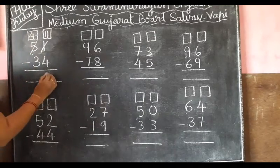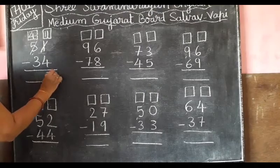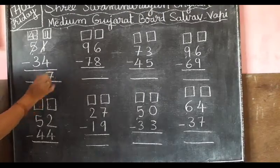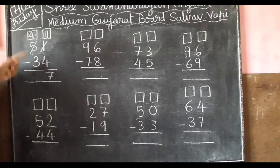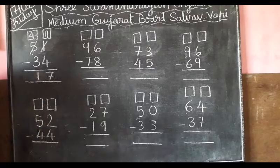Now 7. Then 4 minus 3 equals 1, you know already.